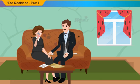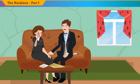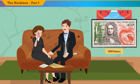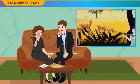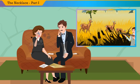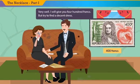Mr. Loiselle was upset, but responded, 'Let's see, Matilda, how much does an acceptable costume cost — something that would also serve for other occasions, something very simple?' She thought for a few seconds about the amount she should ask for. Finally, in a hesitating voice, she said, 'I can't tell you exactly, but it seems to me that 400 francs should cover it.' Mr. Loiselle turned a little pale. He had just saved this amount to purchase a gun so that he could join some of the hunting parties the next summer with some friends who went to shoot the larks on Sundays. A few minutes later, he responded, 'Very well. I will give you 400 francs. But try to find a decent dress.'